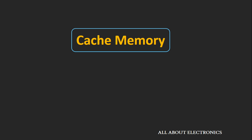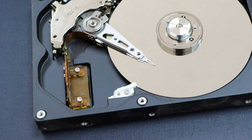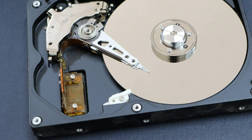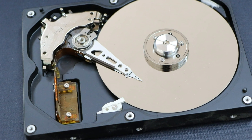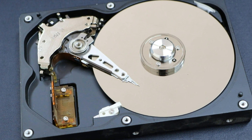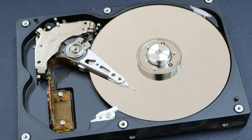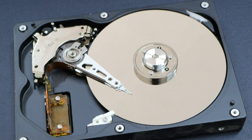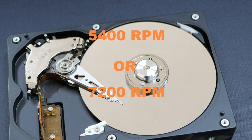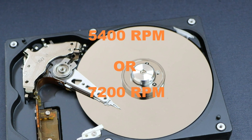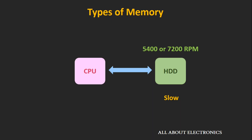Before we understand cache memory, let's see the different kinds of memory inside our computers. The first kind is non-volatile memory like a hard disk drive. This hard disk drive contains a mechanically rotating disk, also known as platters. The typical rotation speed of a commercially available hard disk drive is either 5400 or 7200 RPM. As it contains a mechanically rotating part, it is quite slow in terms of speed.